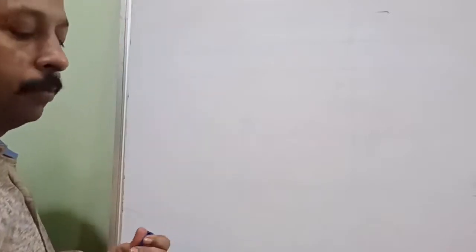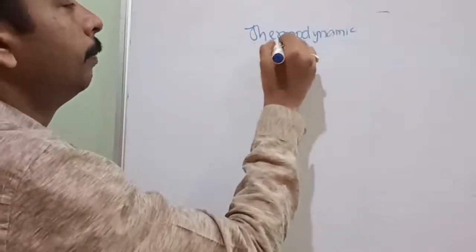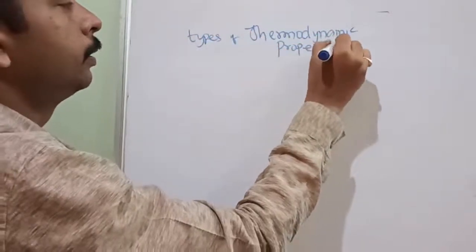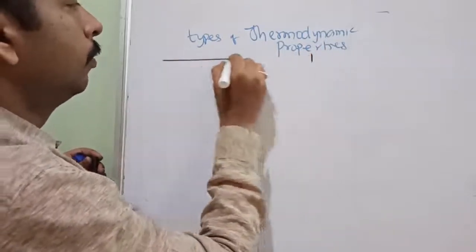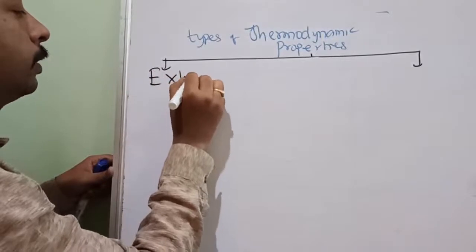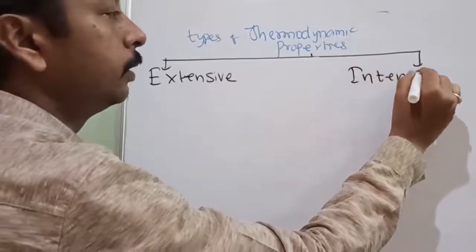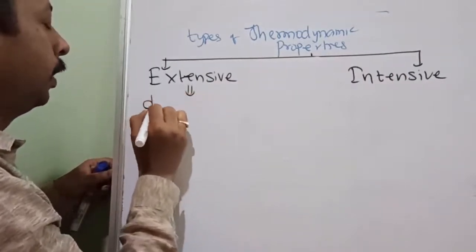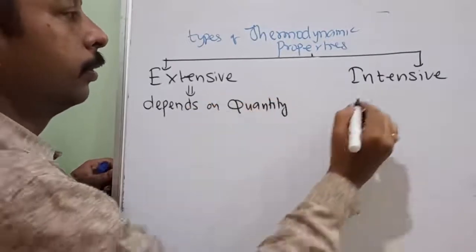Now let us take about thermodynamic properties. There are two types of thermodynamic properties. The first one is extensive property and the second one is intensive property. Extensive property depends on quantity, while intensive property is quantity-independent. Let me give you a simple example.